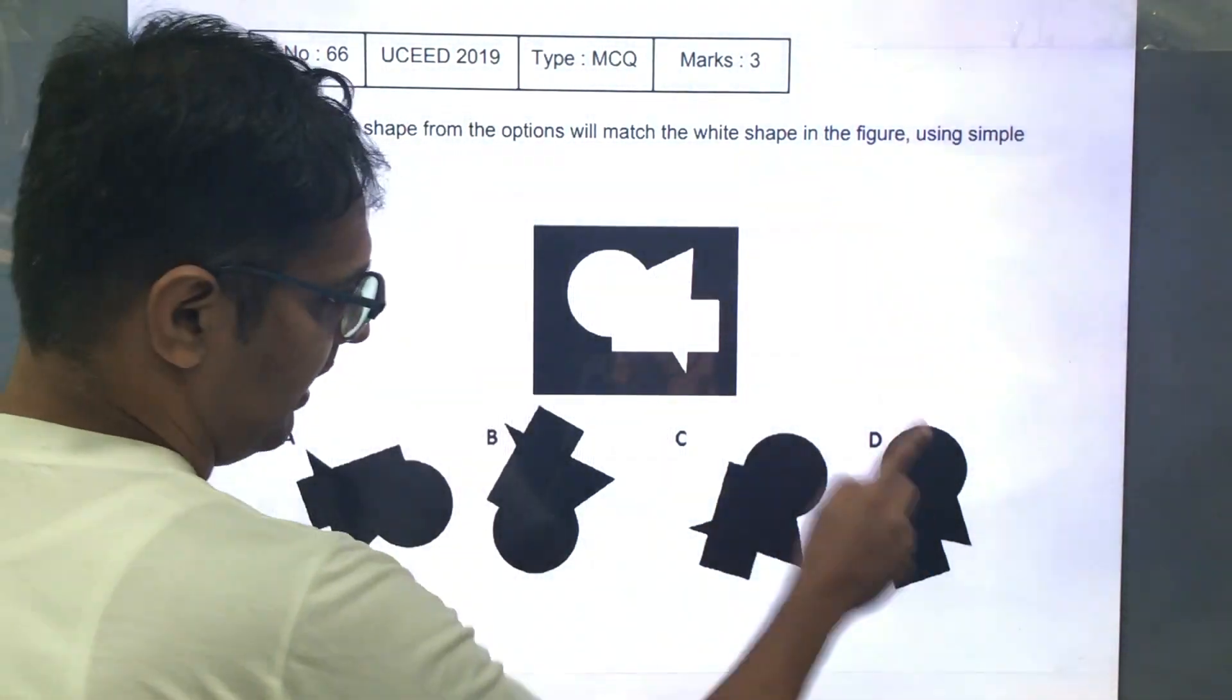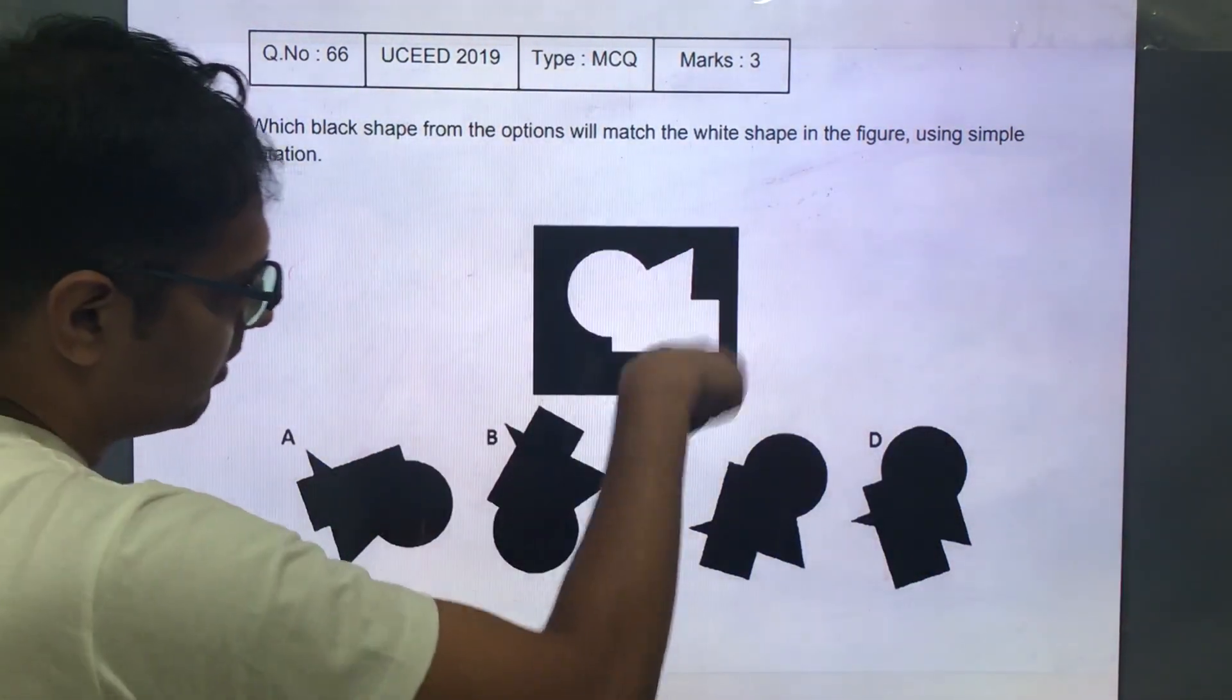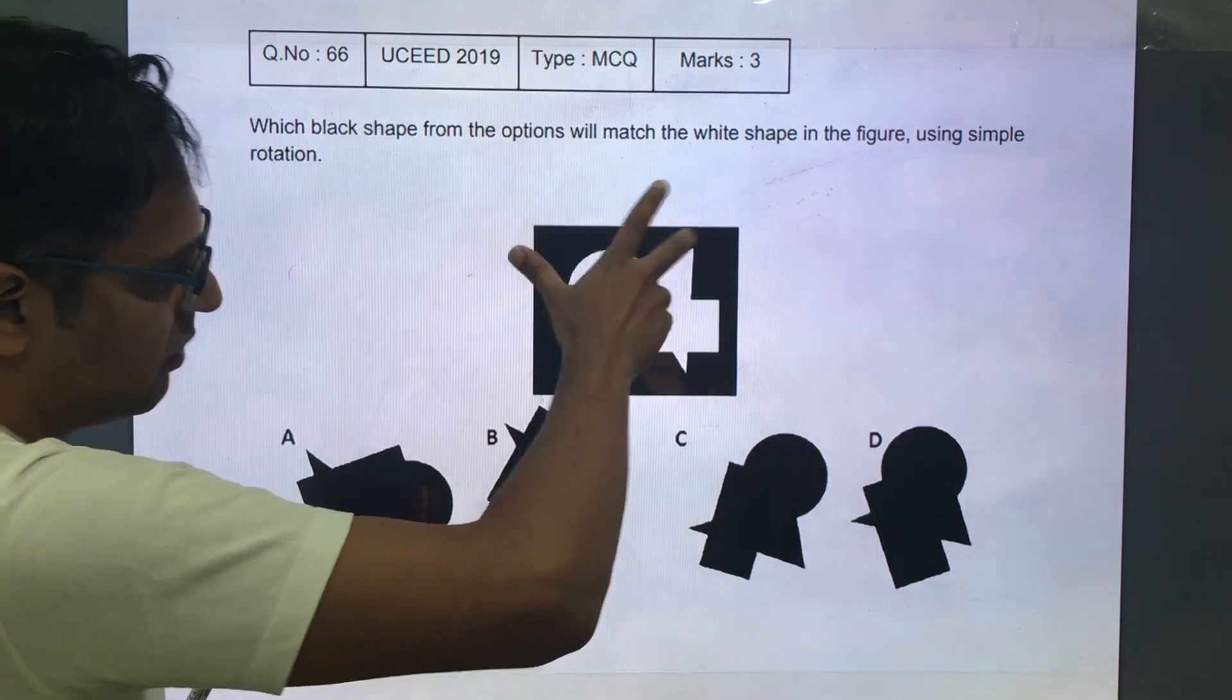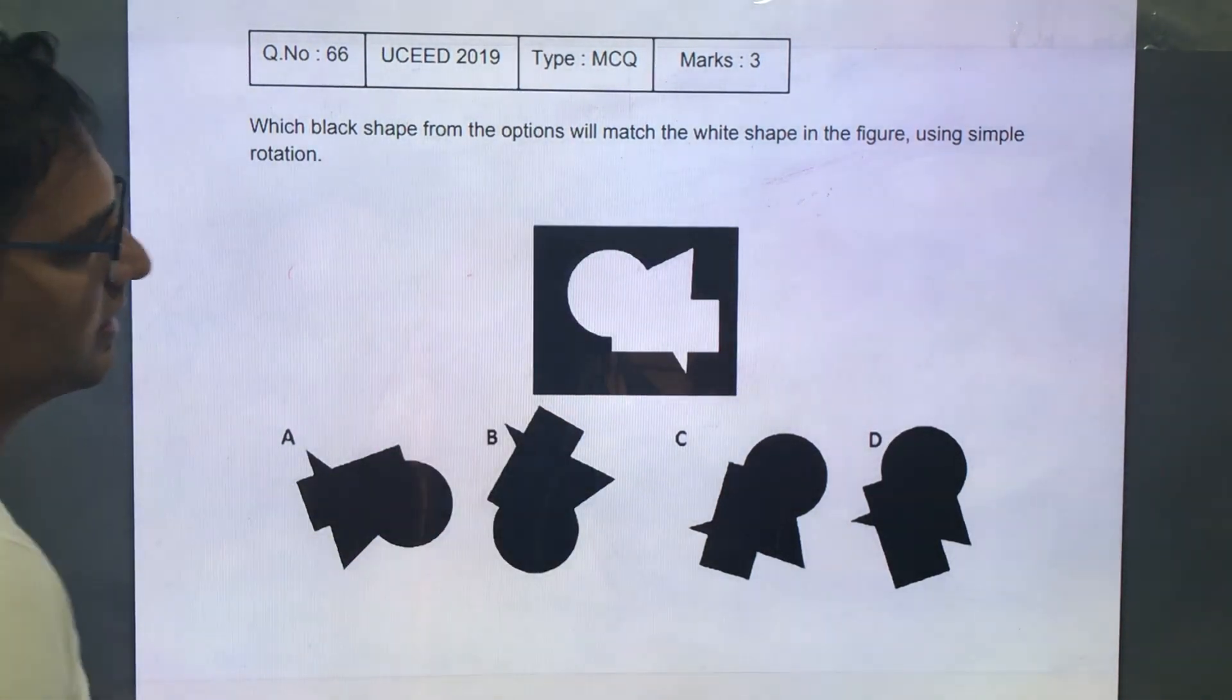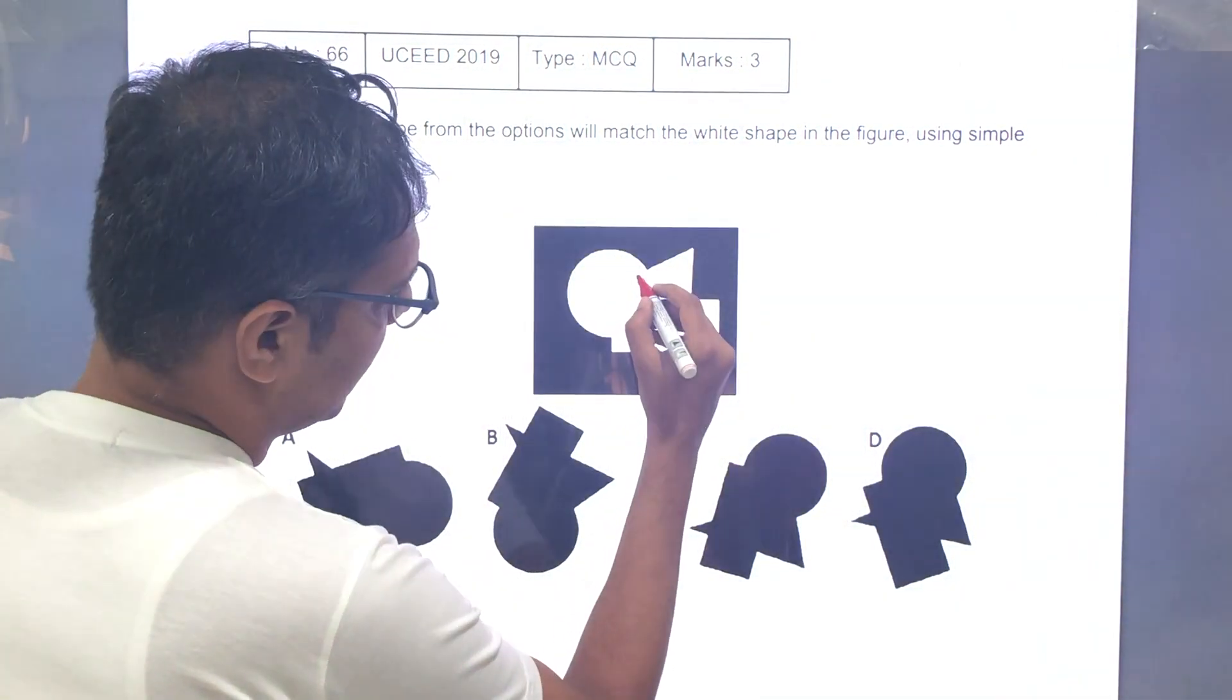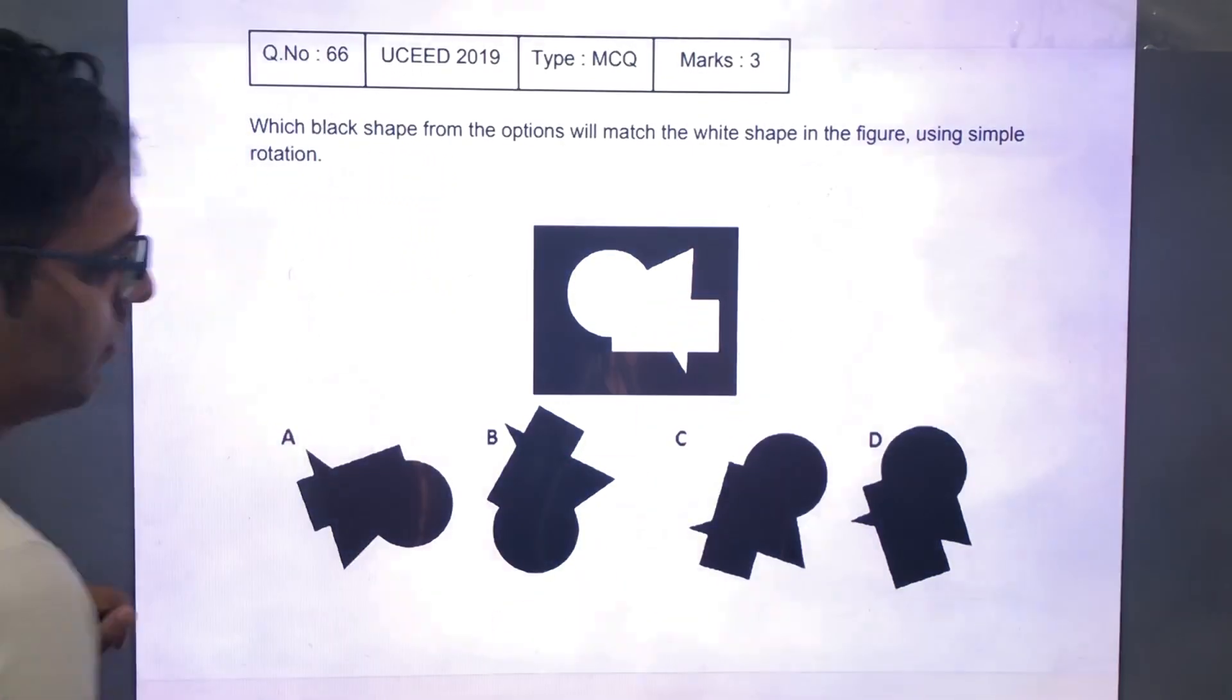So there is a circle in each case. Now since it's only rotation, let's go in the clockwise direction. From the circle there is a triangular shape which is coming out.